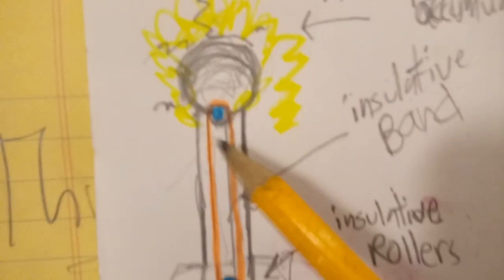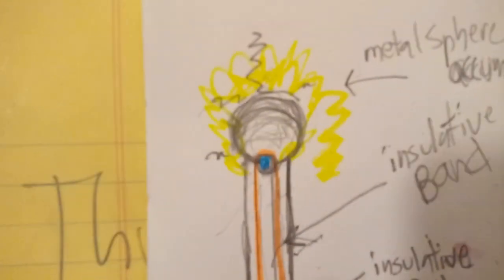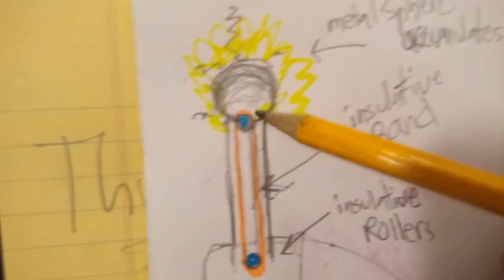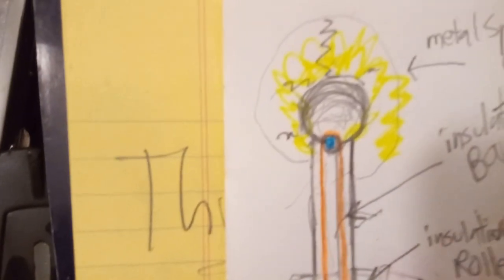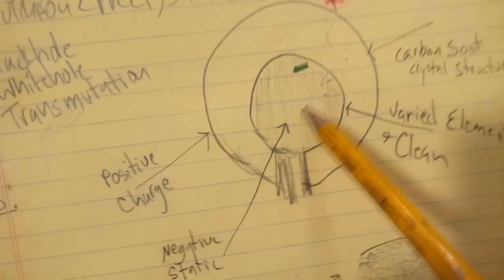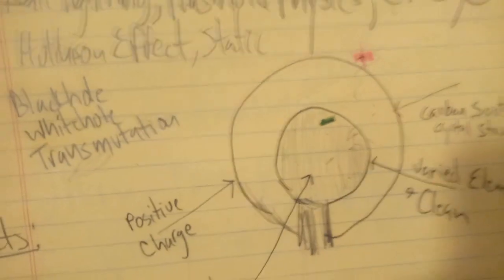So anyway, let's go back to the thunderstorm generator and the Van de Graaff generator. Take a Van de Graaff generator like this and then put a shell around it. That, my friends, is essentially the thunderstorm generator.